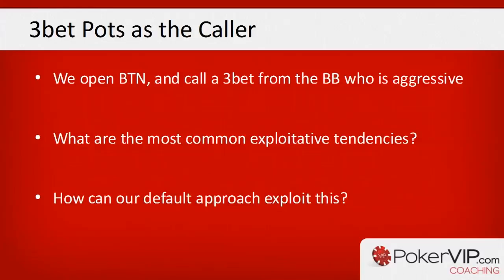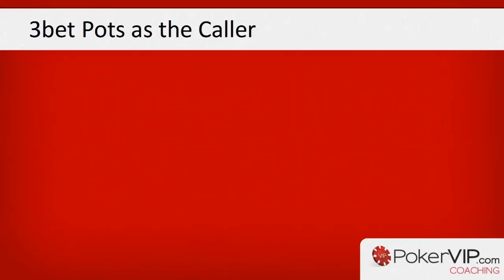Our default strategy is to float the flop or bluff-raise the flop depending on texture, and think about taking the pot away on the turn if our opponent checks. Hopefully on the flop we can take the pot down reasonably frequently with a raise as well, simply because our opponent has a very high c-betting frequency.